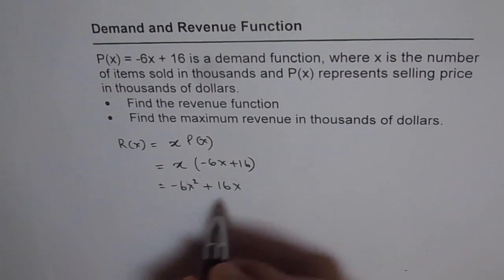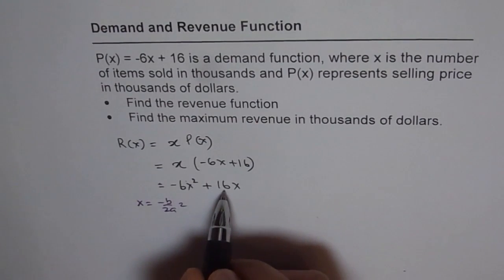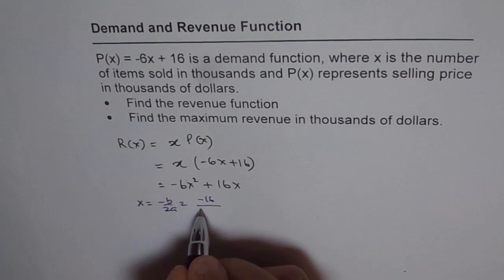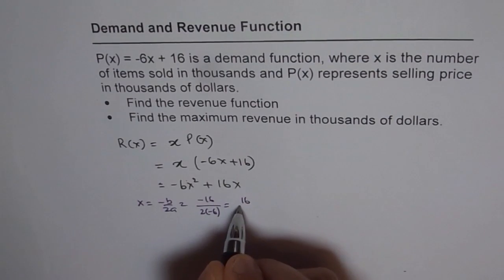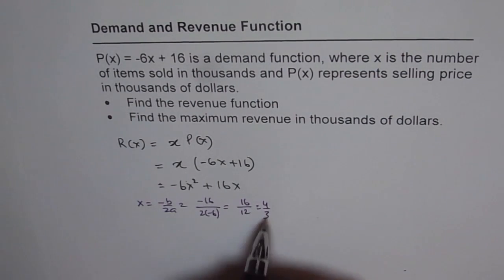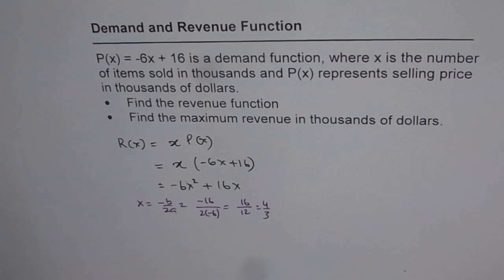The maximum will be at x = -b/2a. If you apply that formula, -b is 16 here. So -16 divided by 2 times a, which is 2 times -6, gives you 16 over 12, which equals 4/3. So for x = 4/3 thousands, we get the maximum profit. If we substitute 4/3 here, you can get the answer.